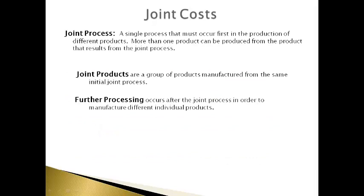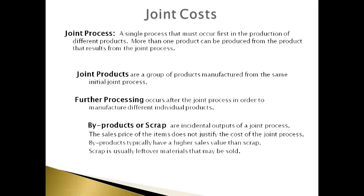Let's begin with an explanation of a joint process and the terminology associated with accounting for joint cost. A joint process is the first stage of production that occurs in order to produce a combination of products called joint products. Making the different joint products requires further processing cost. The joint process may produce scrap or products that cannot be sold to normal customers but may be sold to other manufacturers. Waste is disposed of and is generally not sold.